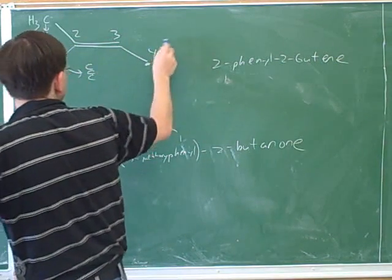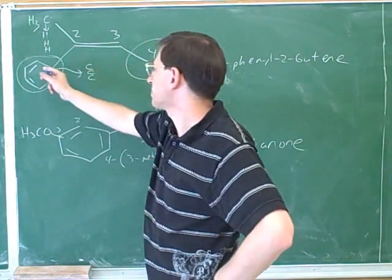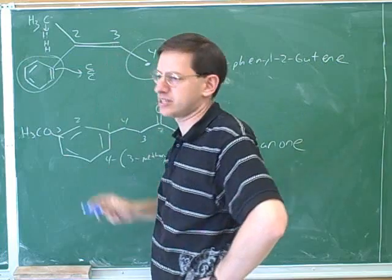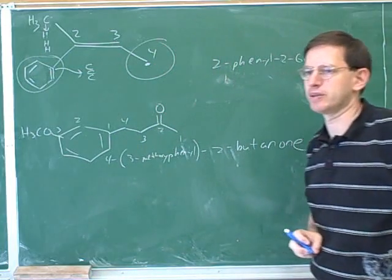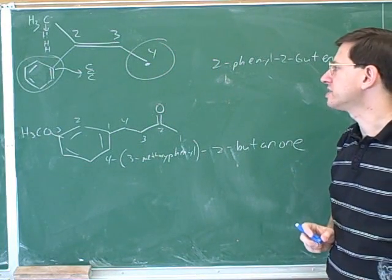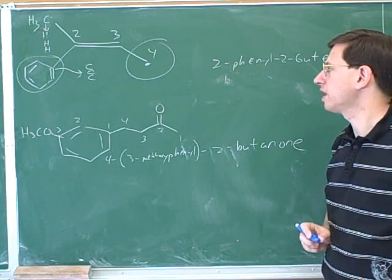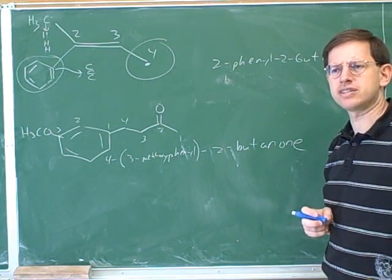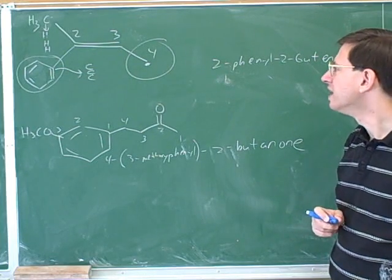So I'll go ahead and circle this, and circle this. This is the higher priority substituent on the left-hand alkene carbon, and this is the higher priority substituent on the right-hand alkene carbon. So it turns out that the two substituents we need to focus on are on the same side of the double bond. Okay. Do you remember if that's E or Z? Z. That's Z. That's right.